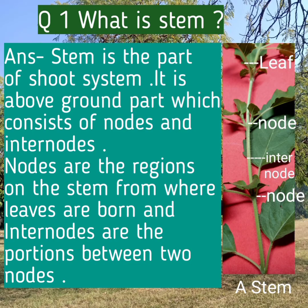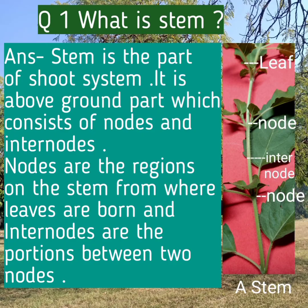Question number one: What is stem? Answer: Stem is a part of the shoot system. It is the above-ground part which consists of nodes and internodes. Nodes are the regions on the stem from where leaves are born, and internodes are the portion between two nodes.